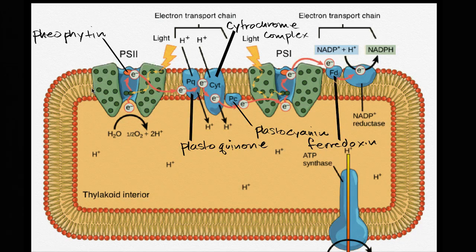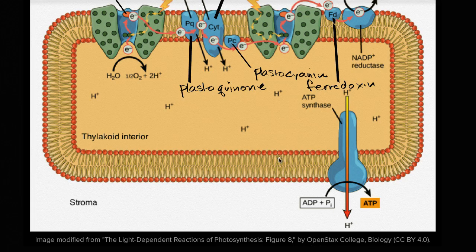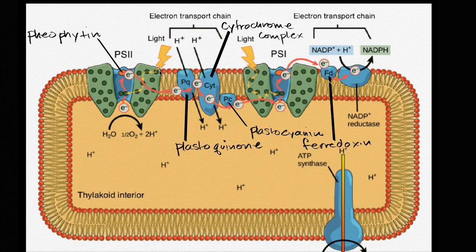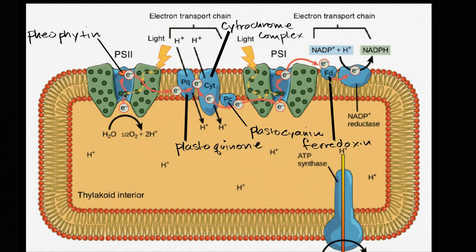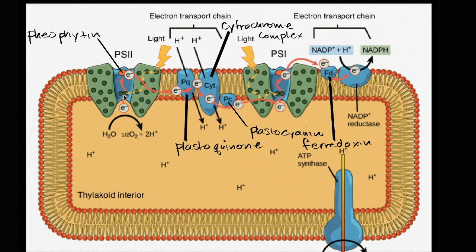So right over here, this is photosystem two. We see the light is interacting the way it's depicted here, not directly with the chlorophyll pair within photosystem two, that P680 chlorophyll A pair. We see it acting on some of these neighboring molecules, as their electrons get excited, and then go to lower energy levels, that energy can be used to excite neighboring electrons. This kind of keeps happening, that energy gets transferred eventually to excite the electron in that P680A pair, and then that electron, the first electron acceptor, is pheophyton.